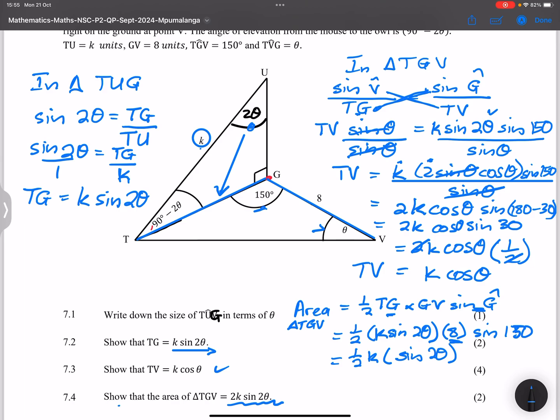And remember, we said that this is equal to the sine of 30. And that would give us simply 1 over 2. Right. So this is 8 multiplied by 1 over 2. So if you notice that, ladies and gents, I've got 8 times 1 over 2. Okay. Which is 4 times another 1 over 2. Right. Which will give me 2. So this will be 2k sine of 2θ.